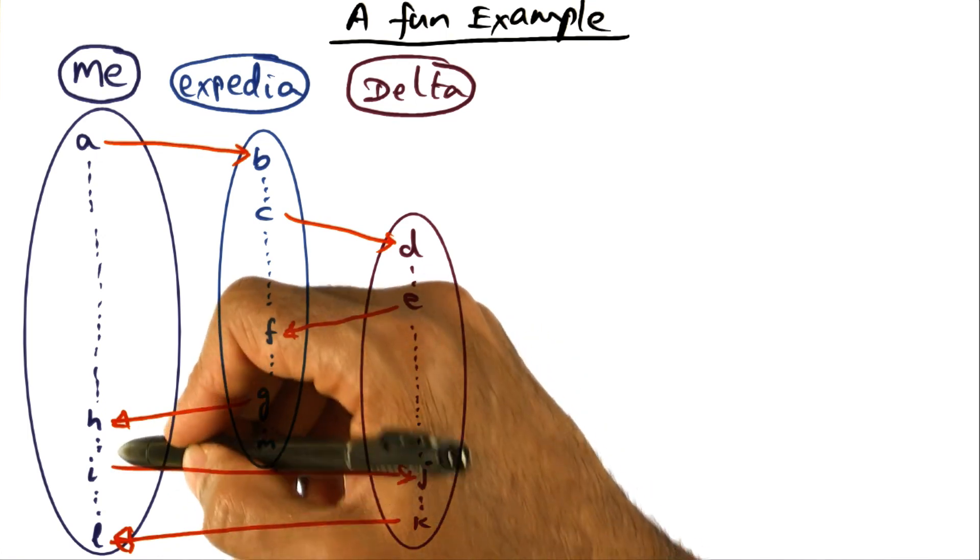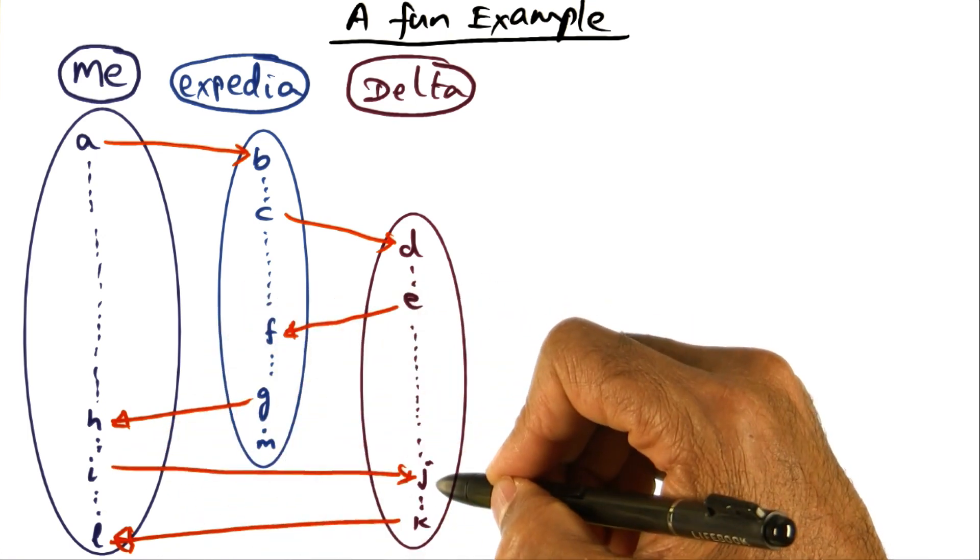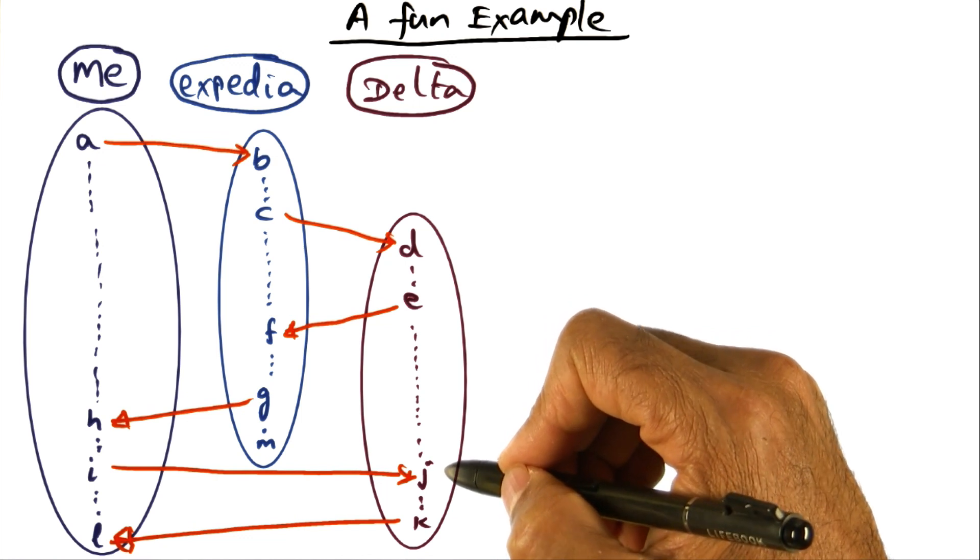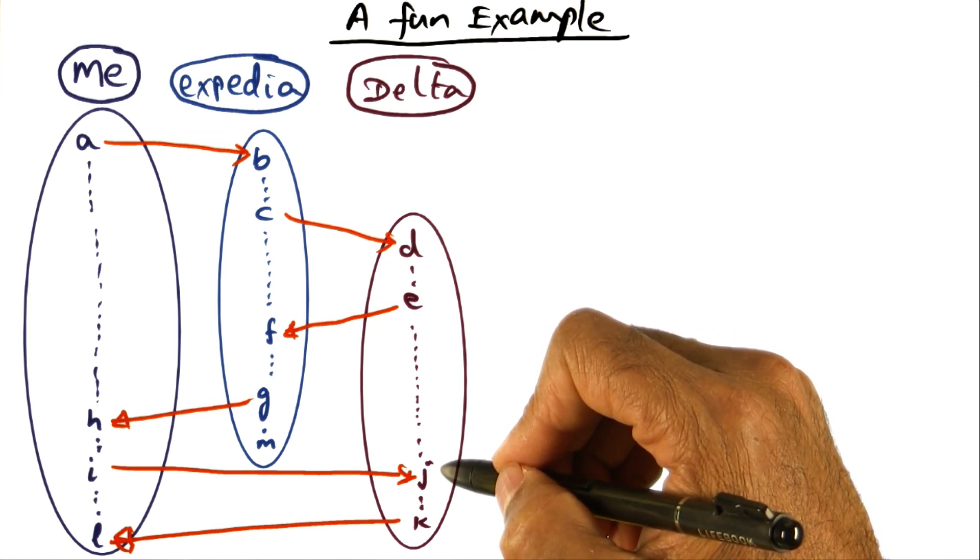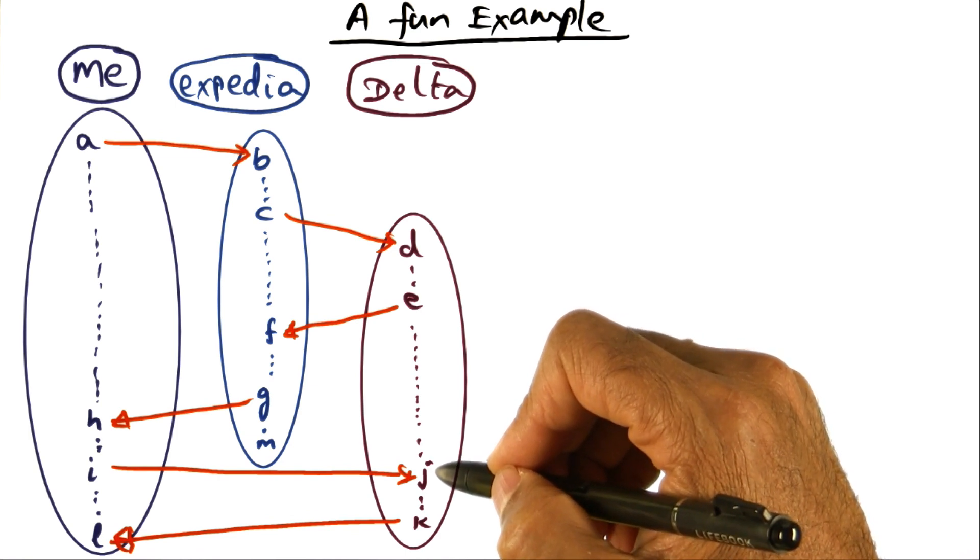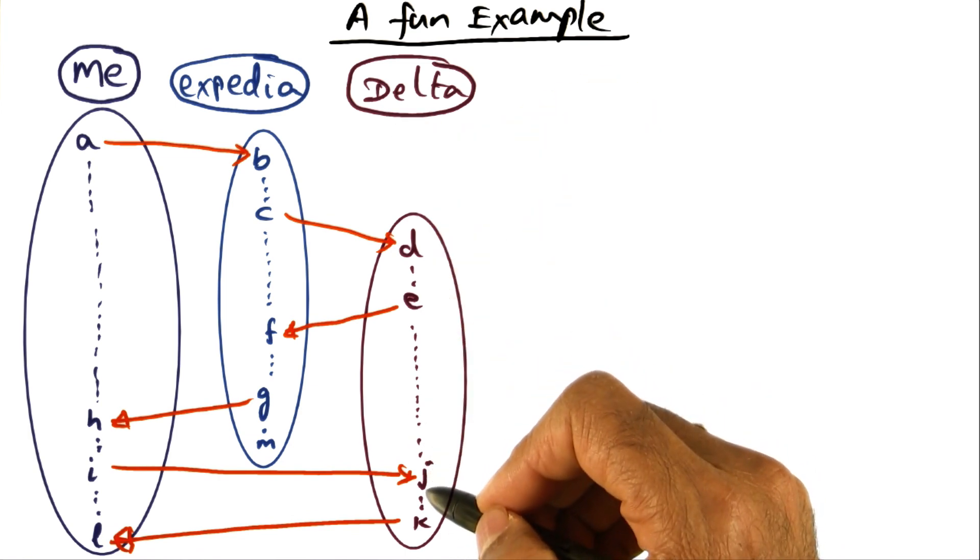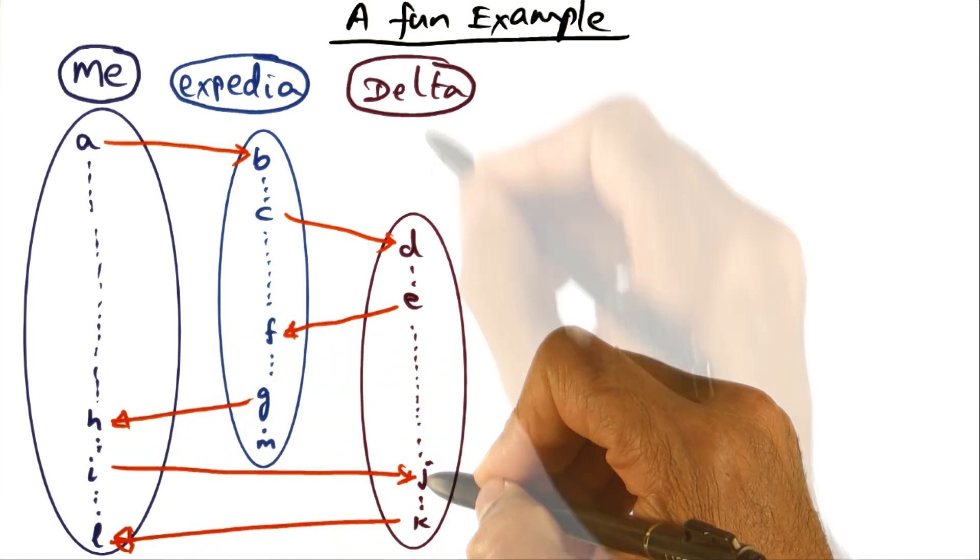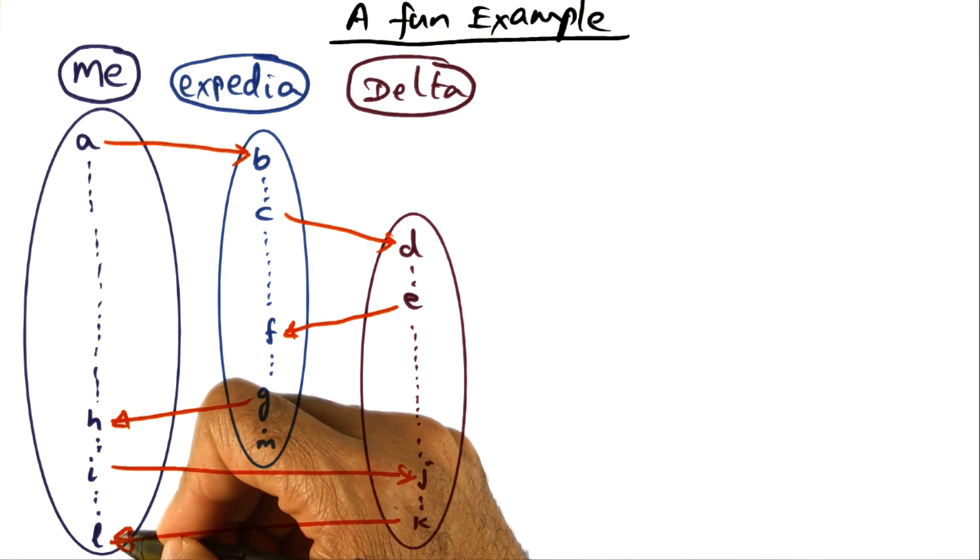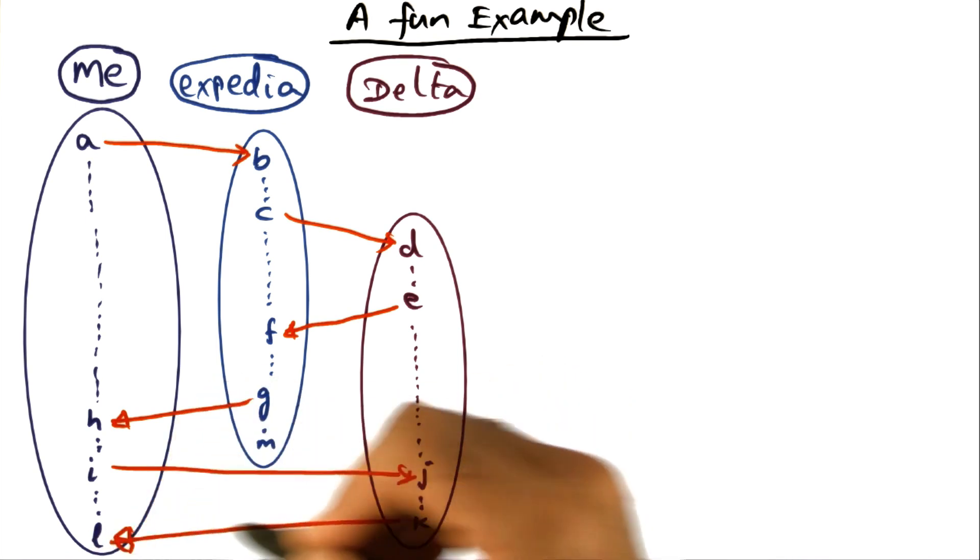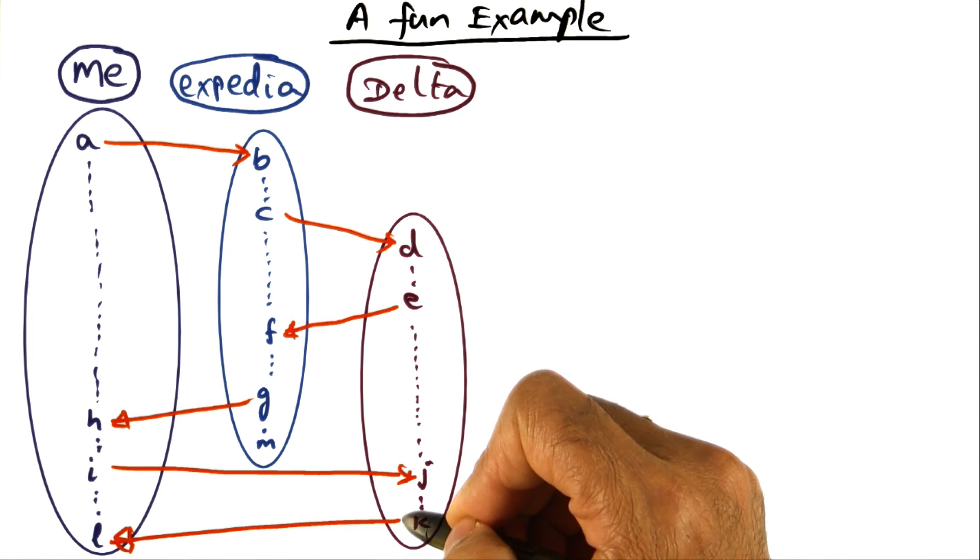And then what I'm doing is I'm directly contacting Delta, message from me to Delta, asking for my preference for food. Fortunately, it's an international trip, so I'm going to get a little bit more than peanuts on the Delta flight to India. So I send a message asking for my meal preference. And Delta confirms that yes, you have your meal preference. That's the message K to L, is the message that confirms that I have my meal preference, I'm all set.